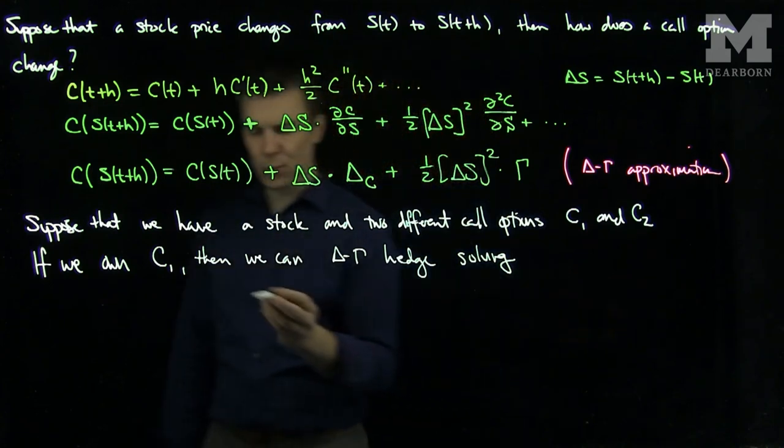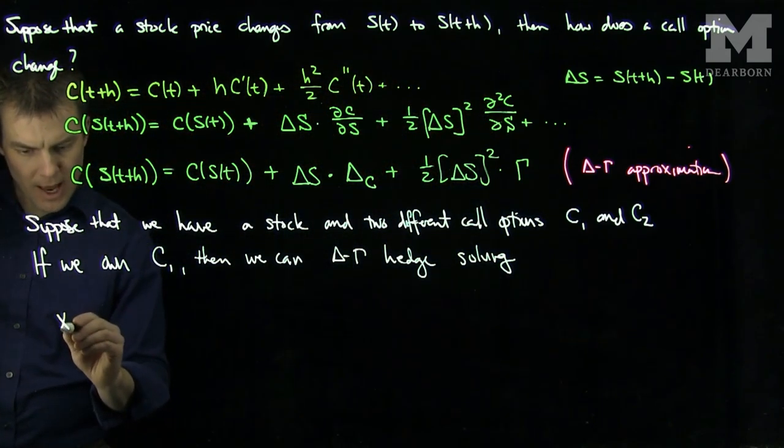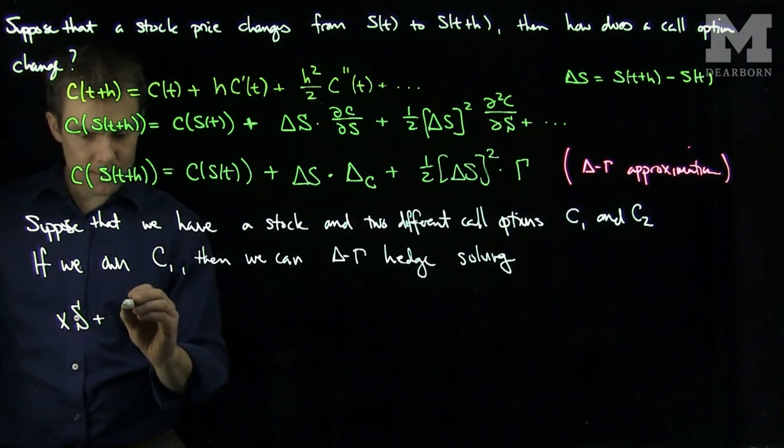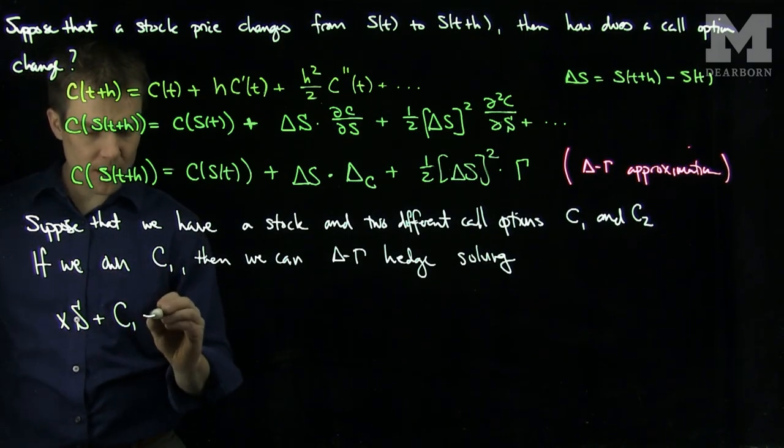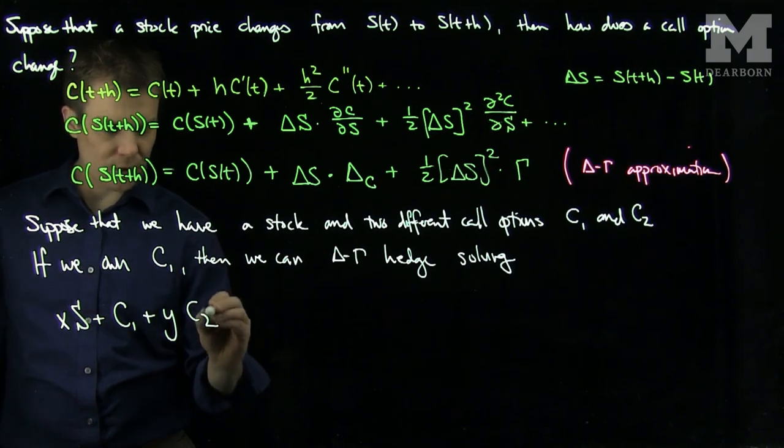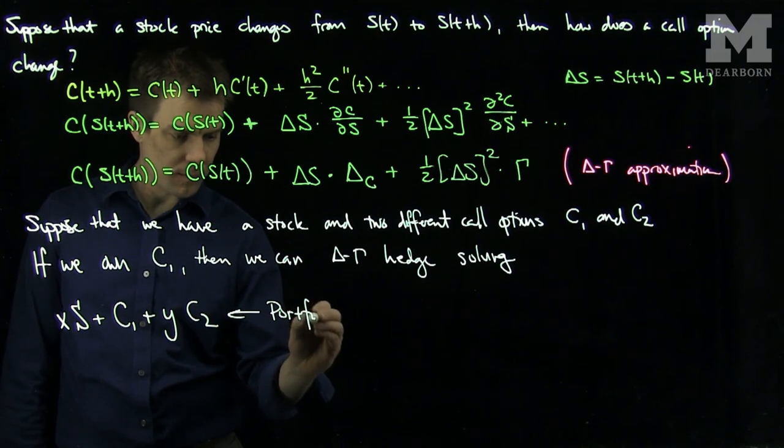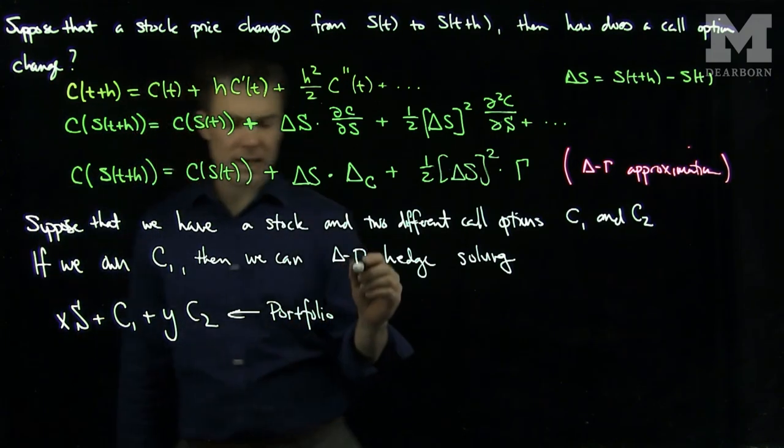Well, what system do we want to solve? We'll purchase x of the stock, we will have the call option C₁, and we'll do y of the call option C₂ in a portfolio designed to hedge.